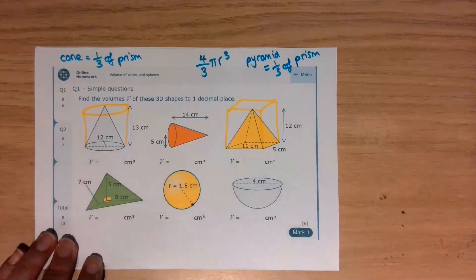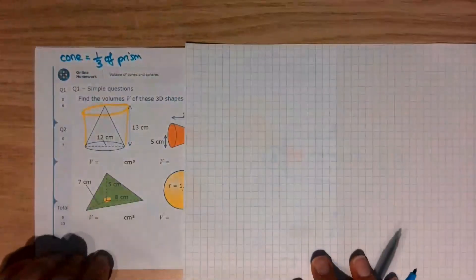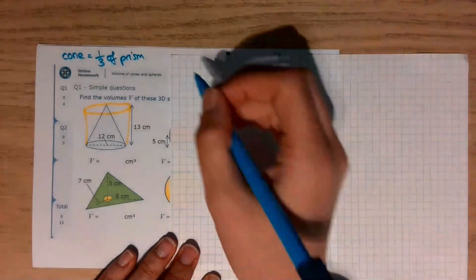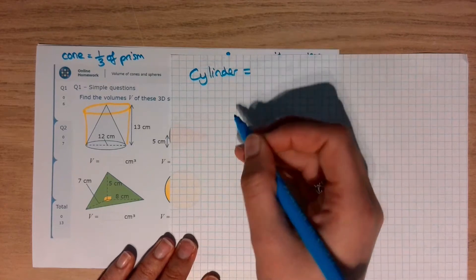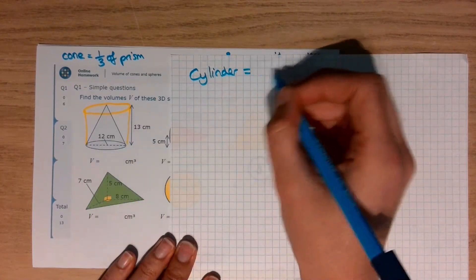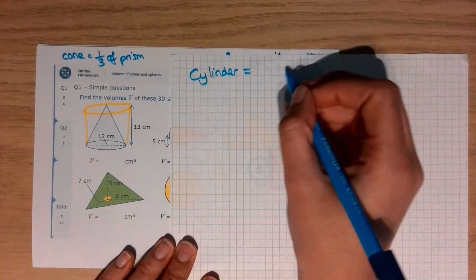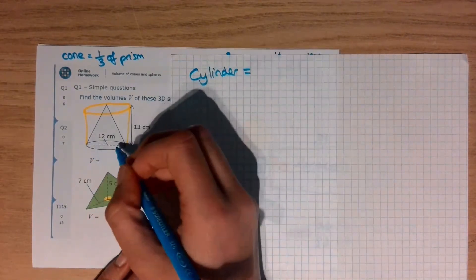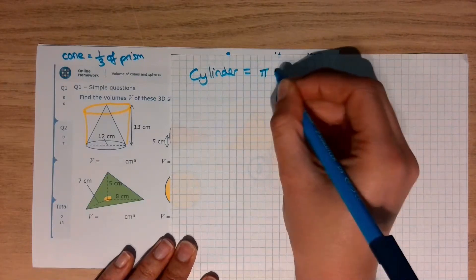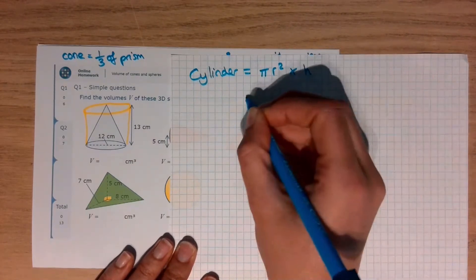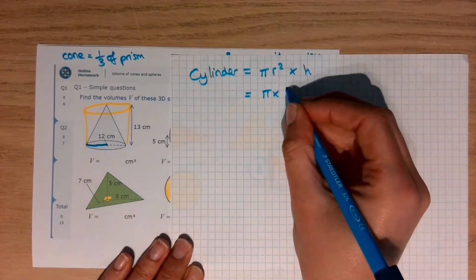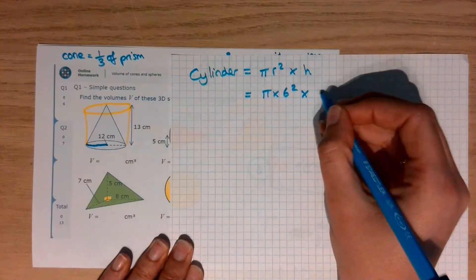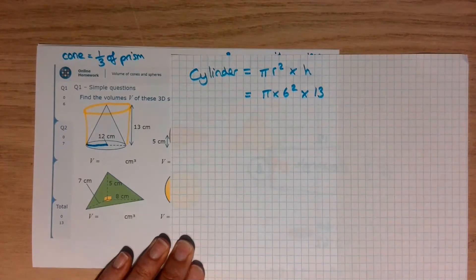Right, so first of all, let's have a look at this cone here. So, first of all, imagine it's a cylinder. The cylinder would be the base area times the height. The base area is a circle. That's pi r squared times by the height. So, pi times the radius. Remember, the radius is halfway across. That is 6 squared times by the height, which is 13. I'm not even going to bother calculating that because I know that it's not a cylinder. It's a cone.